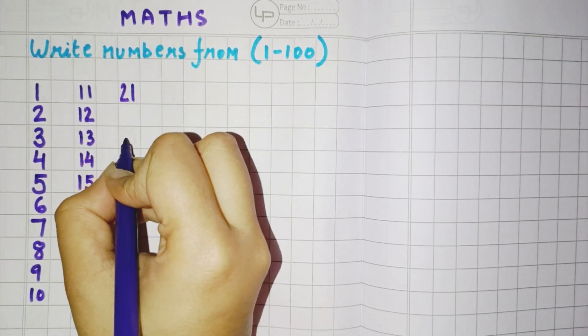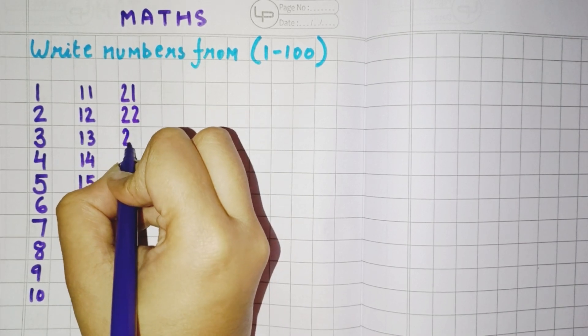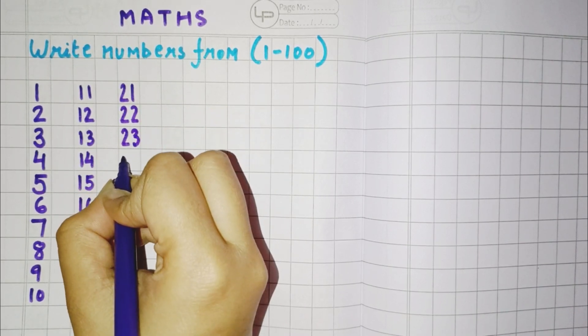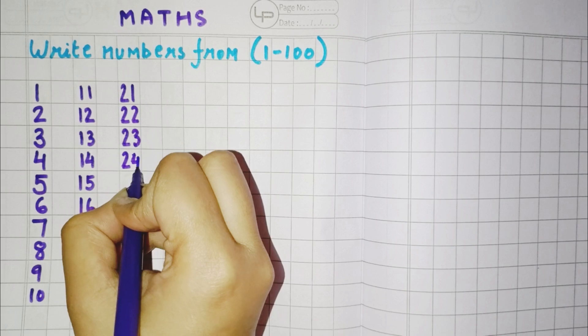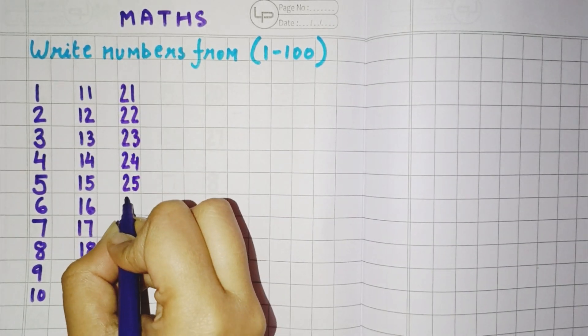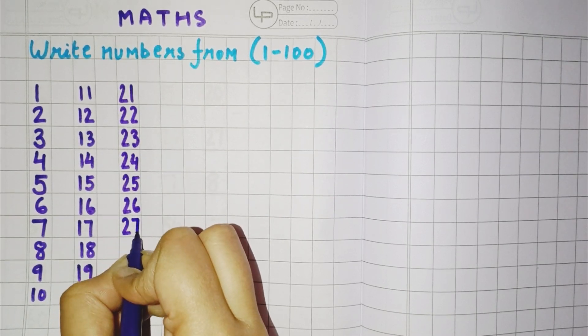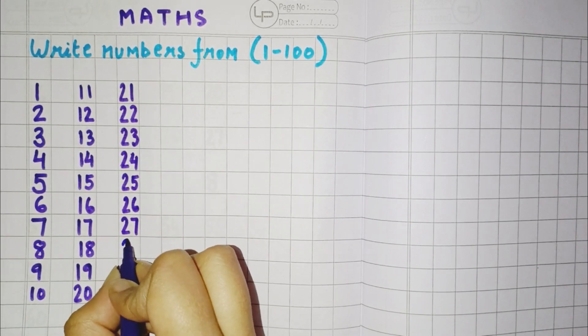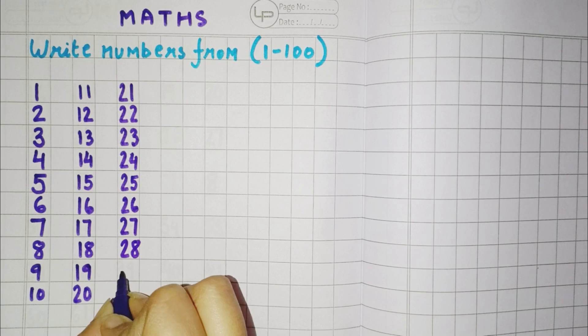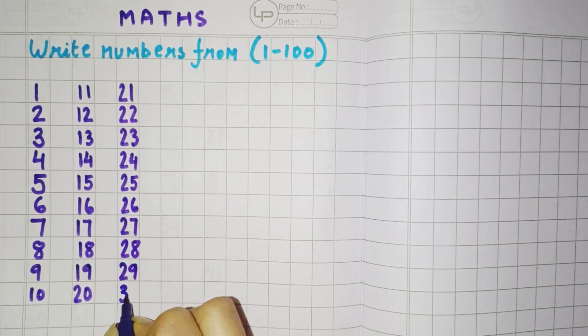2, 1, 21. 2, 2, 22. 2, 3, 23. 2, 4, 24. 2, 5, 25. 2, 6, 26. 2, 7, 27. 2, 8, 28. 2, 9, 29. 3, 0, 30.